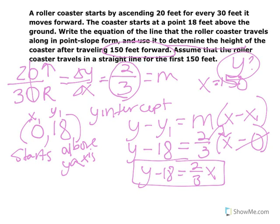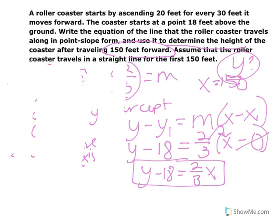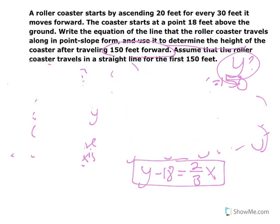I'm looking for my y value. And it says, you know, just to assume that we're going in a straight line for the first 150 feet, like we haven't hit any loops or anything like that. All right, I'm going to erase some of this information so I have some room to work with here. But I'm not going to erase my equation.